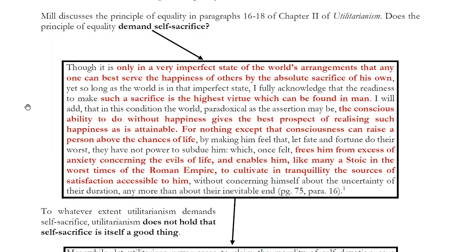Mill says: it's only in a very imperfect state of the world's arrangements that anyone can best serve the happiness of others by the absolute sacrifice of his own. He says the only reason we see helping others, doing what's good for others, as a sacrifice to our own happiness, is because we live in a very imperfect world.